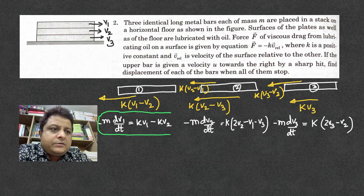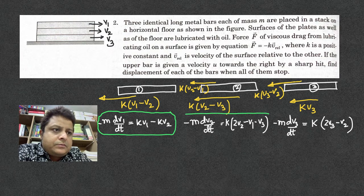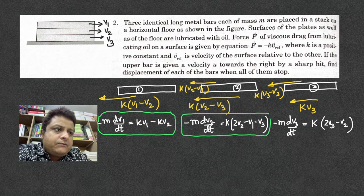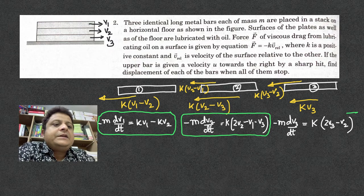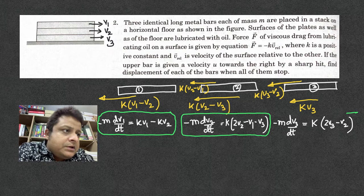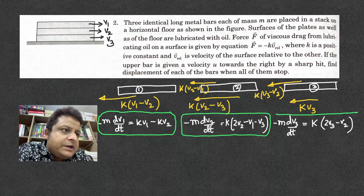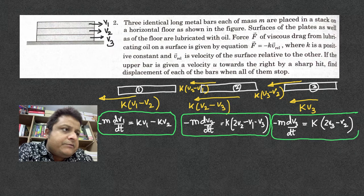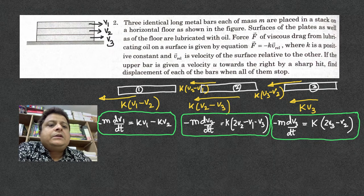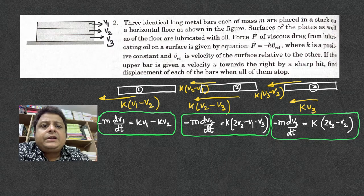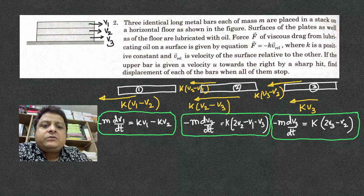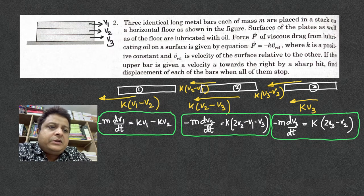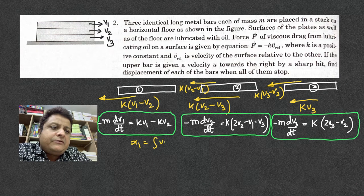Now, integral v1 dt, let x1, x2, and x3 be the distances moved by the bars. So x1 = integral of v1 dt. Similarly, x2 = integral of v2 dt. Similarly, x3 = integral of v3 dt.